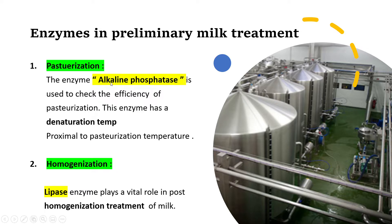To check pasteurization efficiency, we use an enzyme called alkaline phosphatase. Milk naturally contains the enzyme alkaline phosphatase, which is active in alkaline medium.